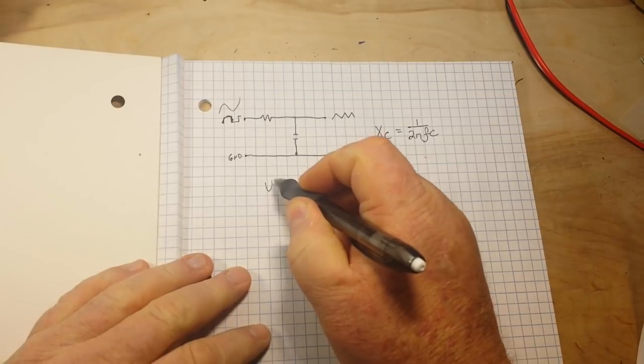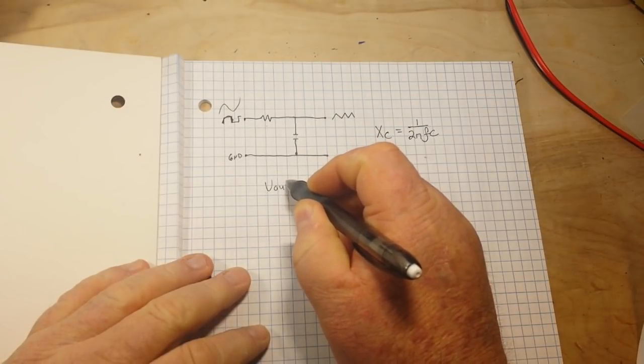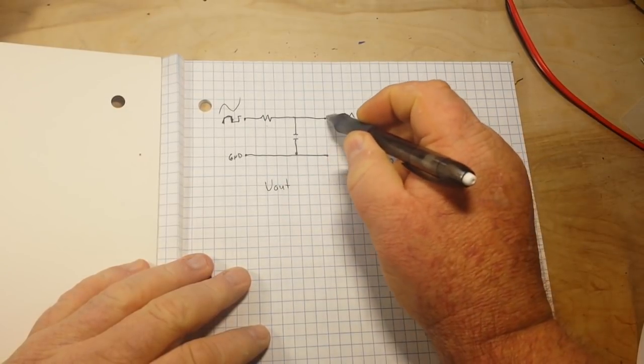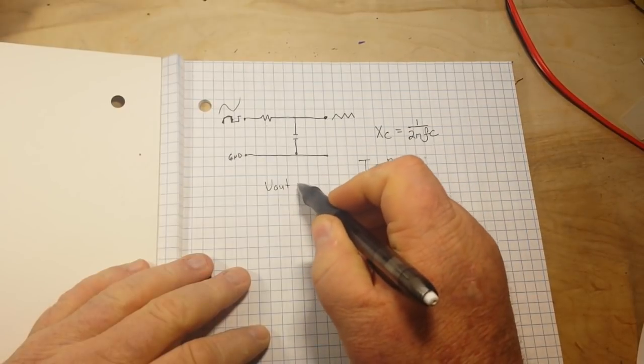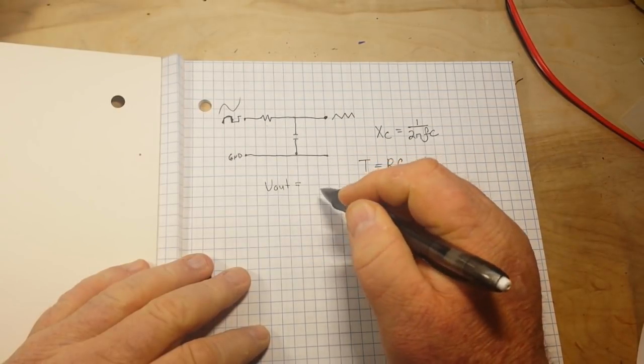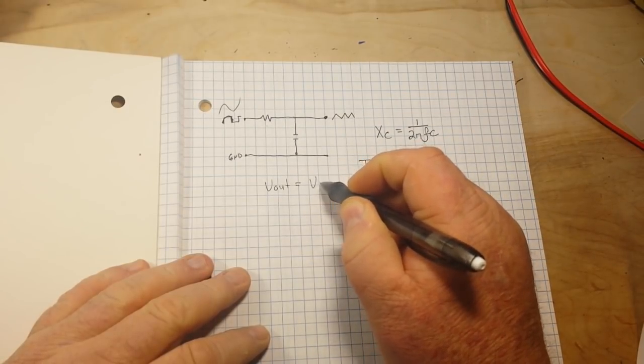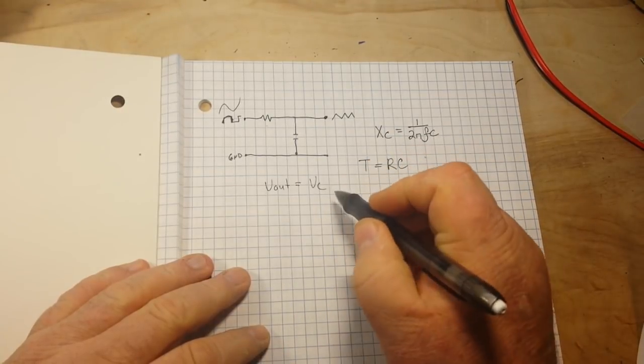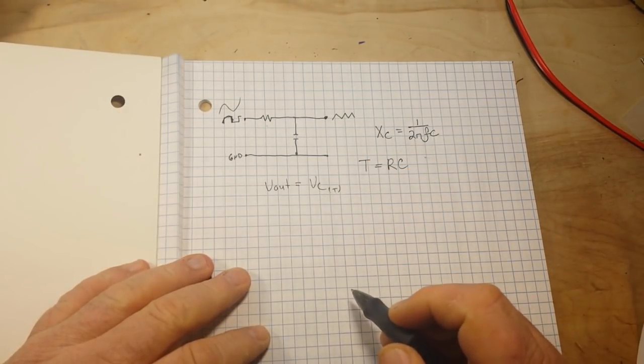Now, our Vout, which we're taking right here, is simply going to be Vc at time.